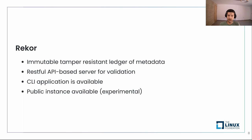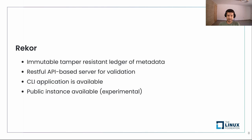Now let's talk about Rekor, the transparency log. Rekor is an immutable ledger of metadata, meaning you can append a new record but you cannot modify or delete any existing record. It provides a RESTful API for querying the data, so you can use it for validation. There is also the Rekor CLI available to query the transparency log. Same as Fulcio, there is a public instance available, though still experimental. You can also run your own instance if you want.